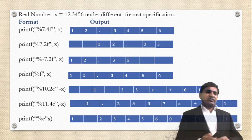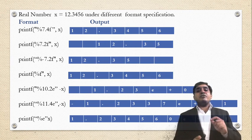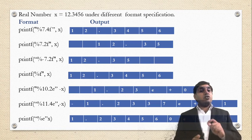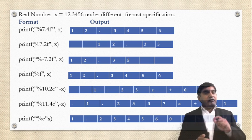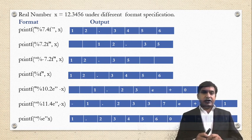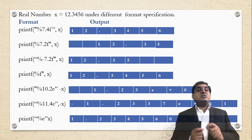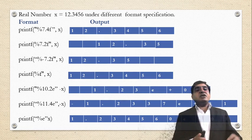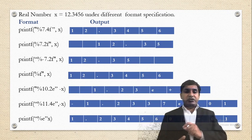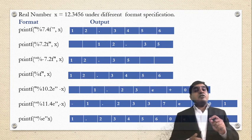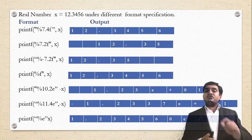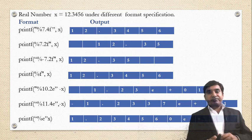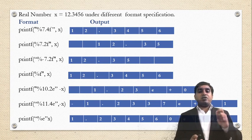Consider real number x = 12.3456 displayed under different format specifications. With printf("%7.4f", x): f indicates a real number, 7 is the width, and .4 means 4 digits after the decimal point. The digits after the decimal point are 3456, and 12 is before the decimal point. With printf("%7.2f", x): width is 7, and .2 means 2 digits after the decimal point, so the result is 12.34, right justified with 2 empty blocks.